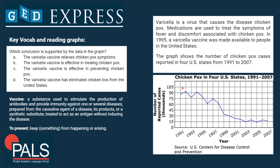What we can see on the graph is that we start off high, fluctuating a little bit until 1995, and then the number of chicken pox cases gradually decreases until 2003, and then stays at a minimum until 2007 with slight fluctuations.